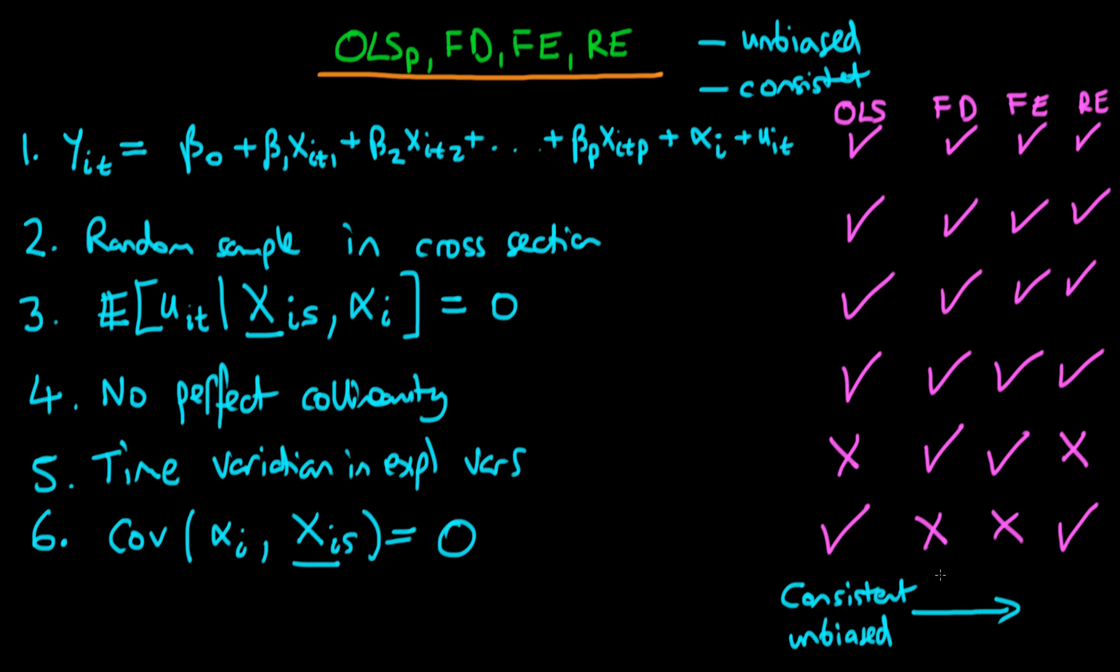And note that these criteria are different to that of pooled OLS. So in the first differences and fixed effects estimation the estimates will be consistent in that as n goes to infinity and t is fixed the estimates converge on the true population parameters.